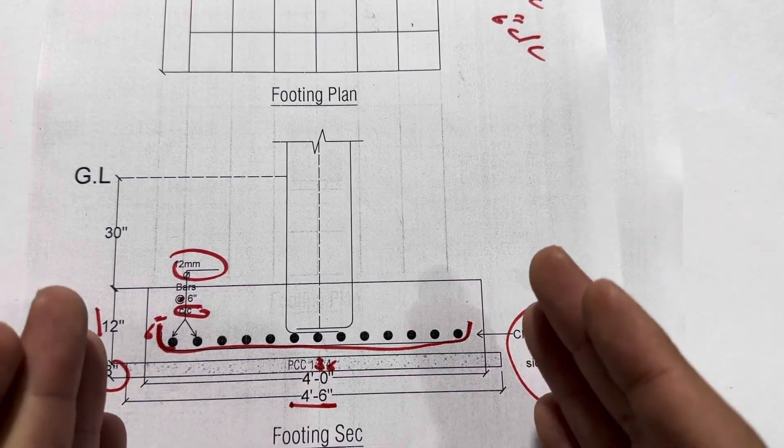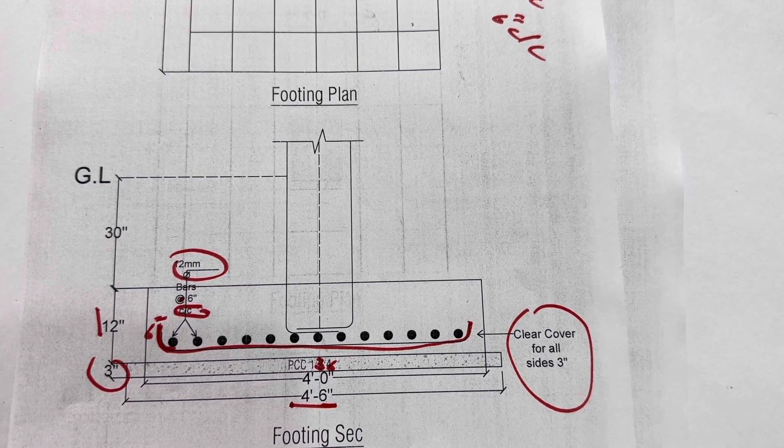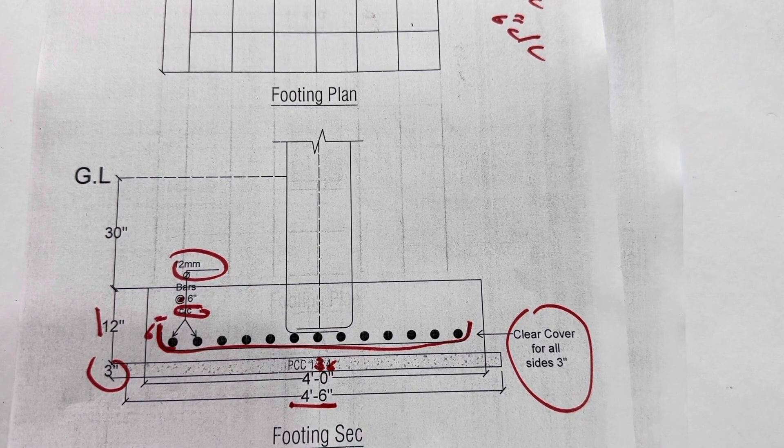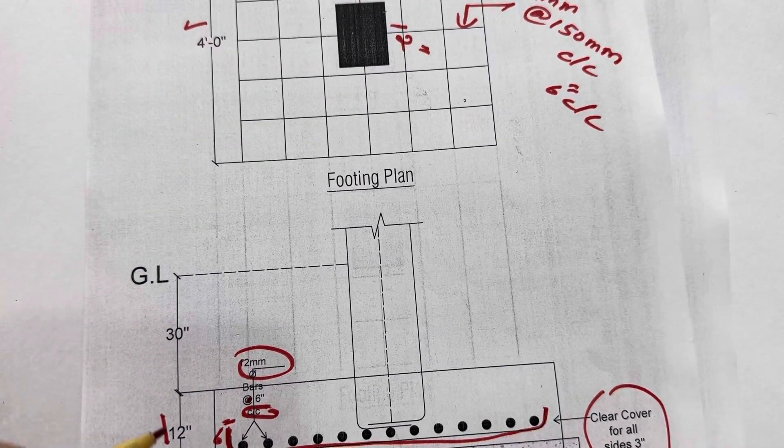That's why, because left side, right side, from all sides, means from four sides, we have concrete cover which is 3 inches. So therefore, 4 by 4 feet mesh, but 4 feet 6 inches by 4 feet 6 inches footing size.